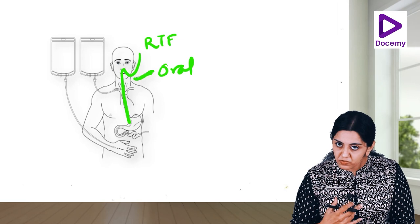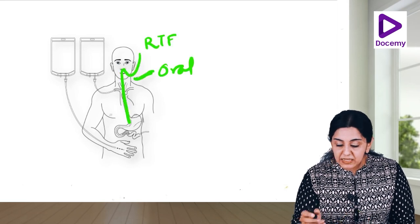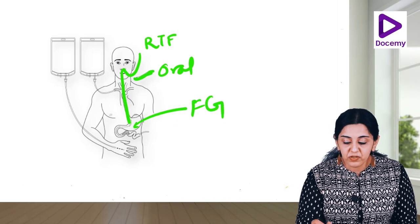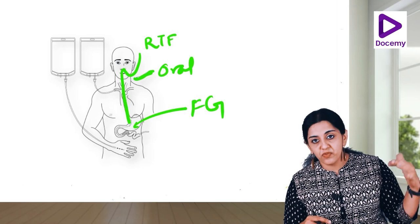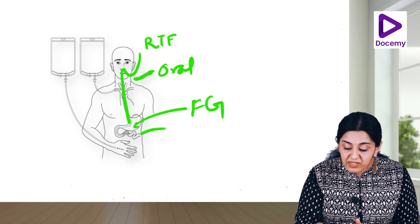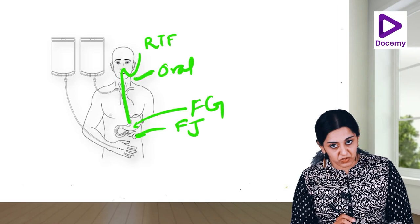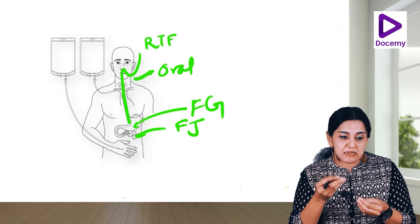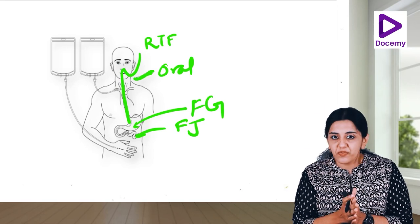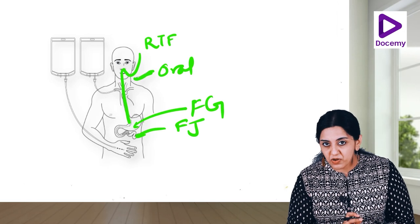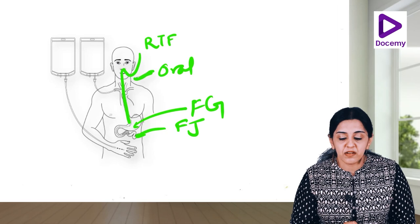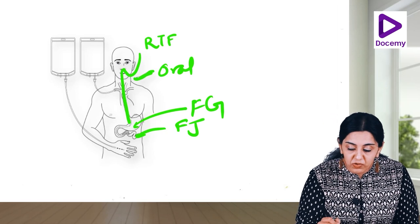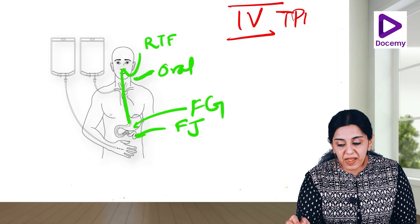Not only through the oral route but also from the nose via nasogastric tube. You can put a tube into the stomach, which is called feeding gastrostomy - directly injecting food into the stomach. You can inject it directly to the jejunum, which is called feeding jejunostomy. But when all these enteral options are not possible, the next option is to feed through intravenous route, or total parenteral nutrition.